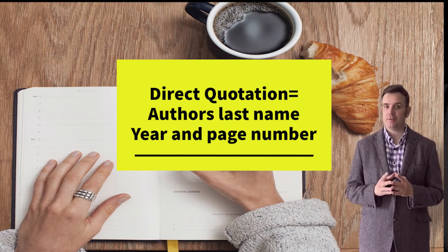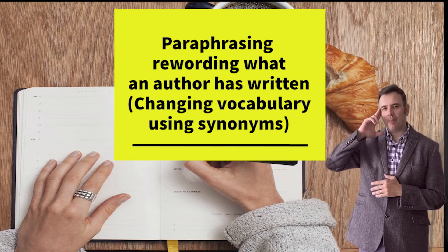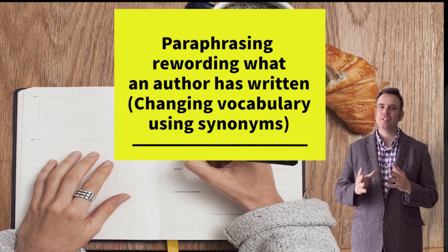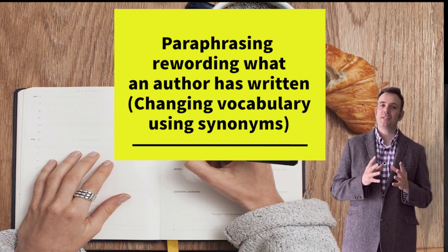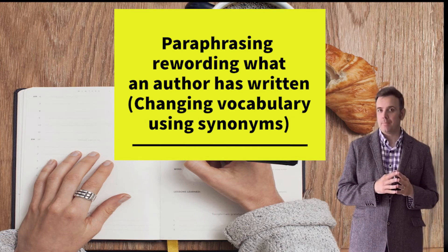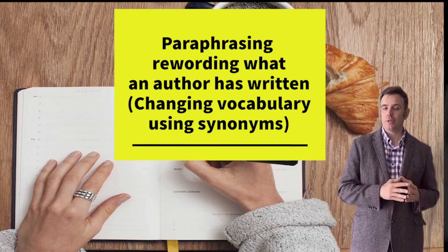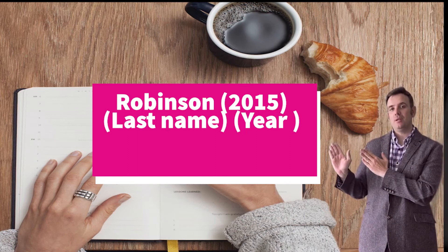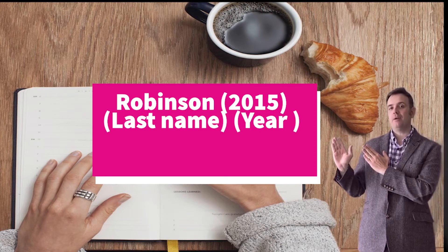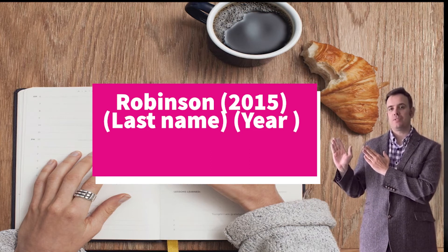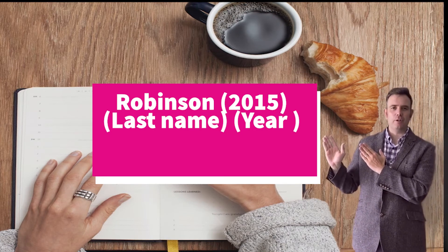Let's look at the paraphrase. Paraphrasing is when you're reading a piece of text, thinking about it, rewording it using synonyms, changing the vocabulary around, and then using that in your paragraph or essay — but you still need to tell the reader where that idea came from. Using the Harvard referencing system, you would have the last name and year in brackets, and your paraphrase comes next. Key things to remember: last name, year in brackets.